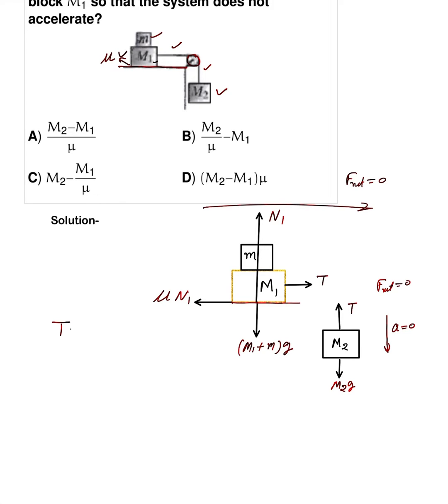For the vertical component, T equals M2g. That's equation number one. N1 equals (M1 plus m)g. And T equals mu times N1. So mu times N1 equals (M1 plus m)g. This is equation number two.